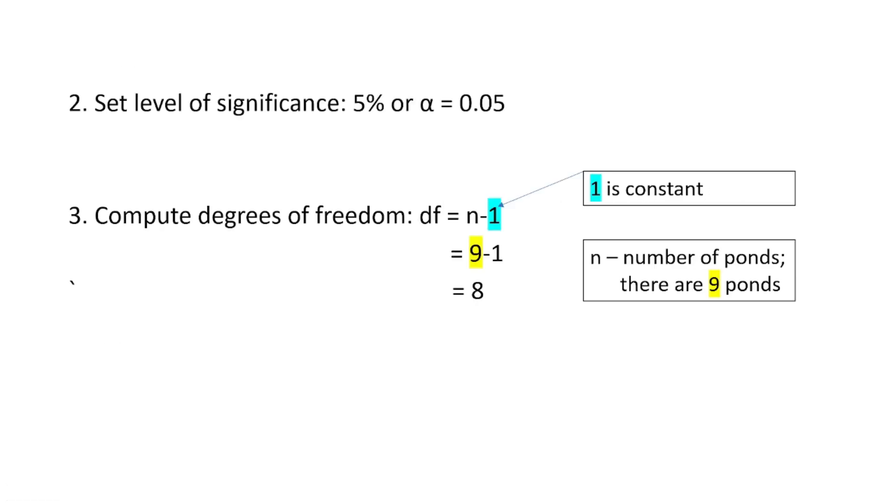Step 2. Let us set the level of significance, which is 5%. Step 3. Let us compute the degrees of freedom. Considering that 9 ponds were involved, degrees of freedom equals 9 minus 1, so our degrees of freedom equals 8.